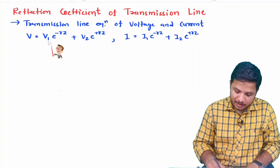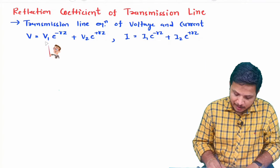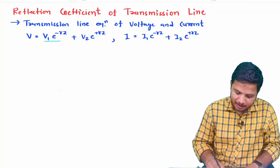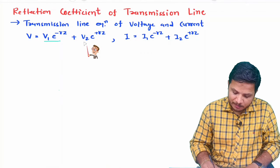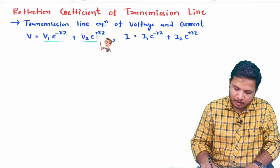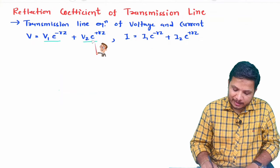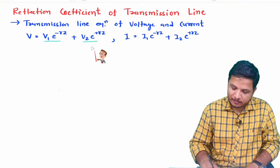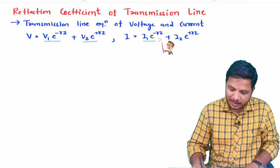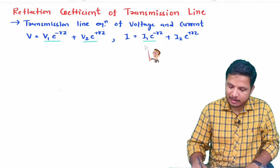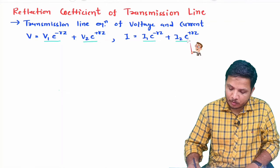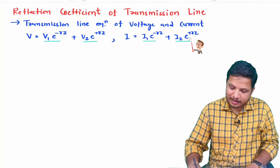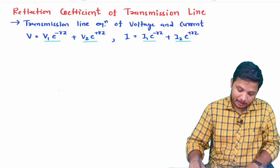In these equations, V1·e^(−γz) is the incident voltage, V2·e^(+γz) is the reflected voltage. Similarly, I1·e^(−γz) is the incident current and I2·e^(+γz) is the reflected current.